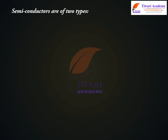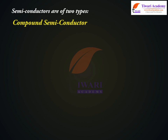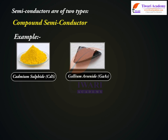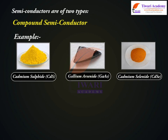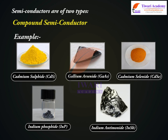Semiconductors are of two types. Elemental Semiconductors, e.g. Silicon (Si) and Germanium (Ge). Compound Semiconductors, e.g. Cadmium Sulfide (CdS), Gallium Arsenide (GaAs), Cadmium Selenide (CdSe), Indium Phosphide (InP), and Indium Antimonide (InSb), etc.